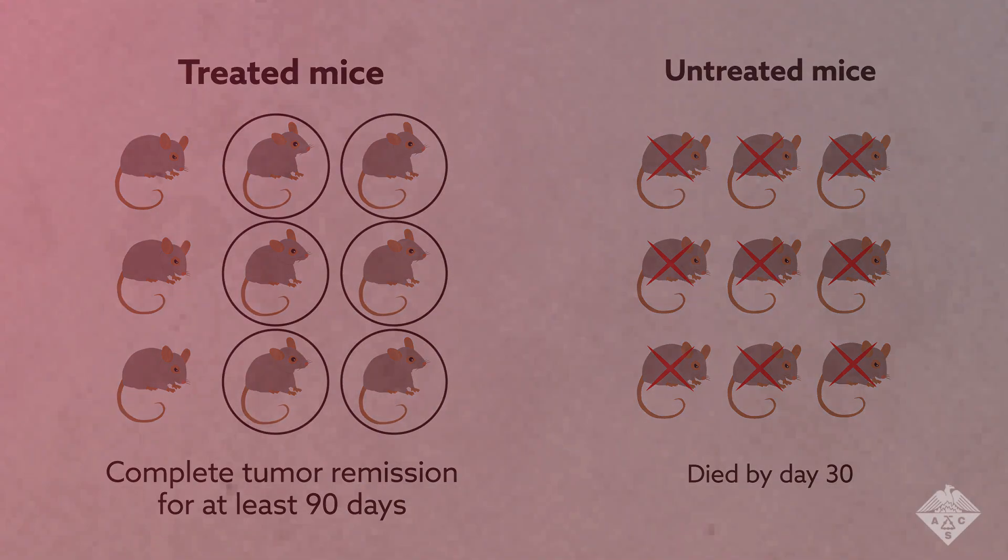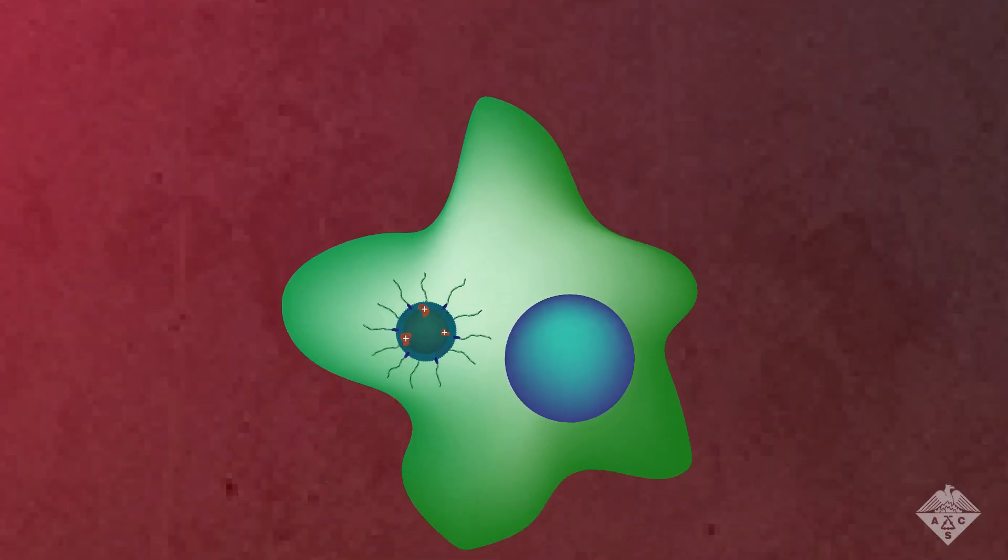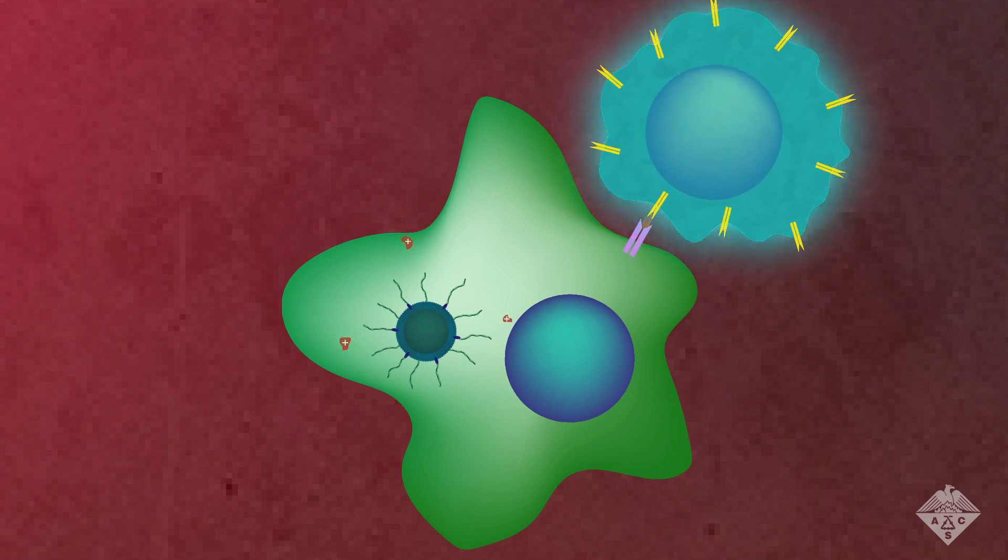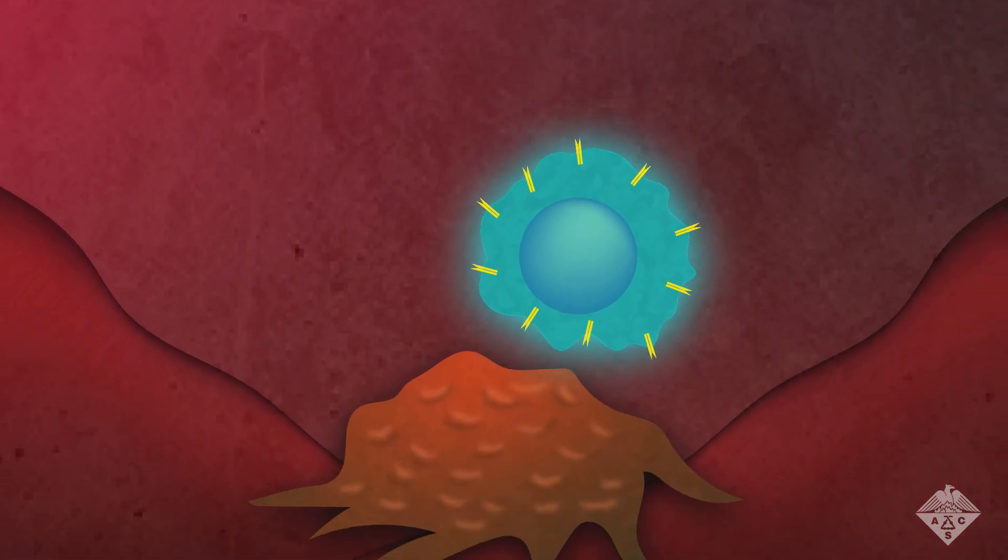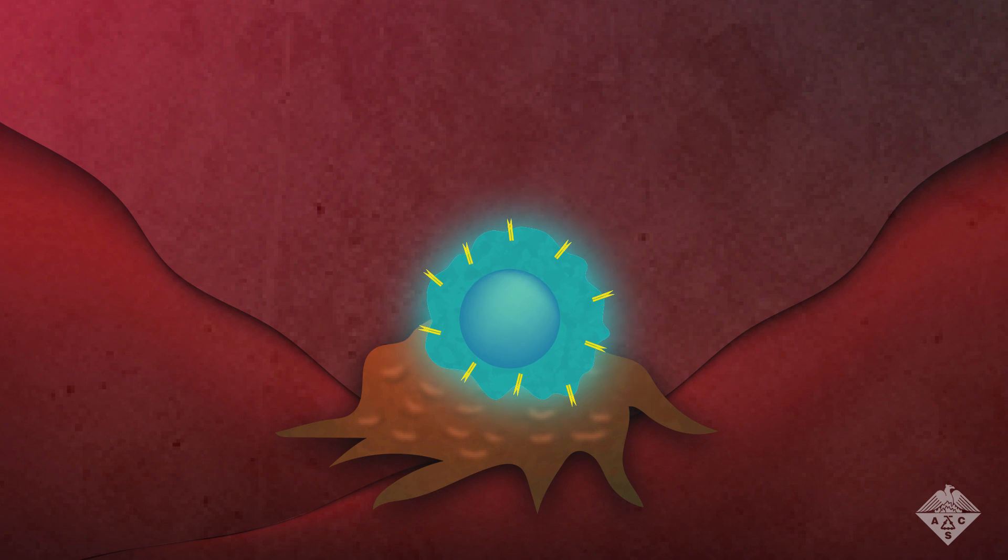More work is needed before the cancer-seeking SNA therapy is ready for clinical trials. Currently, the researchers are trying to figure out why oxidized lysates work better and which proteins in particular immune cells are locking onto. Understanding exactly how the therapy activates the immune system could lead to better ways of fighting triple-negative breast cancer and other forms of cancer.